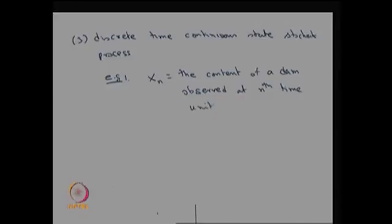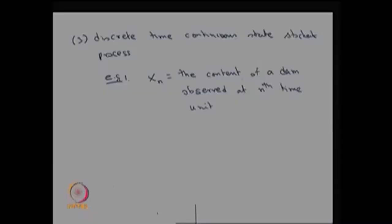The time unit could be every day at a fixed time, or weekly once. So at the end of each nth time unit you observe the content of the dam, which is a real quantity. The parameter space T corresponds to these discrete observation times — daily or weekly — forming a countable index set.